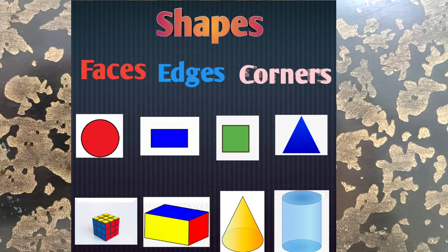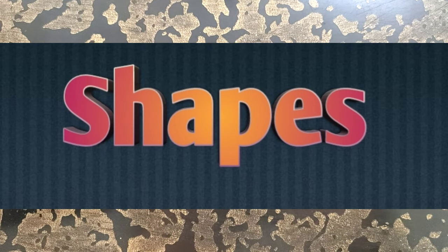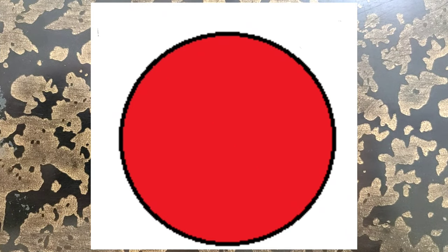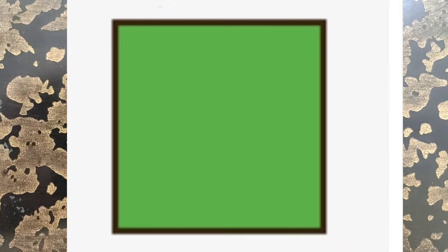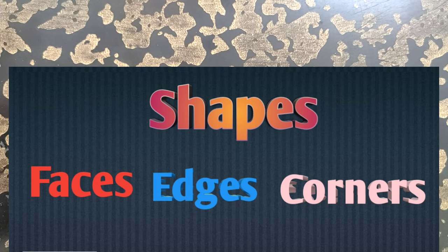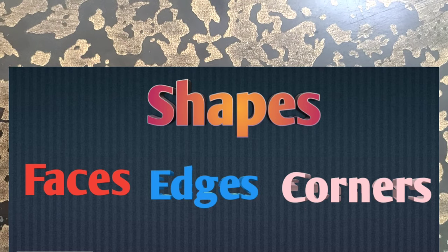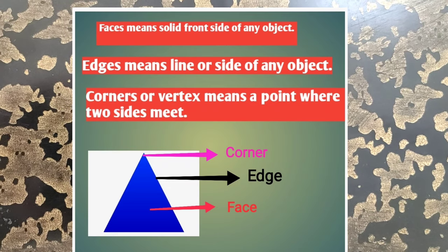Hello dear students, today's topic is shapes. You have read about many kinds of shapes like circle, triangle, square, rectangle, oval, and so many more. You know how to draw shapes and how to recognize them, but today we will learn about their faces, edges, and corners.